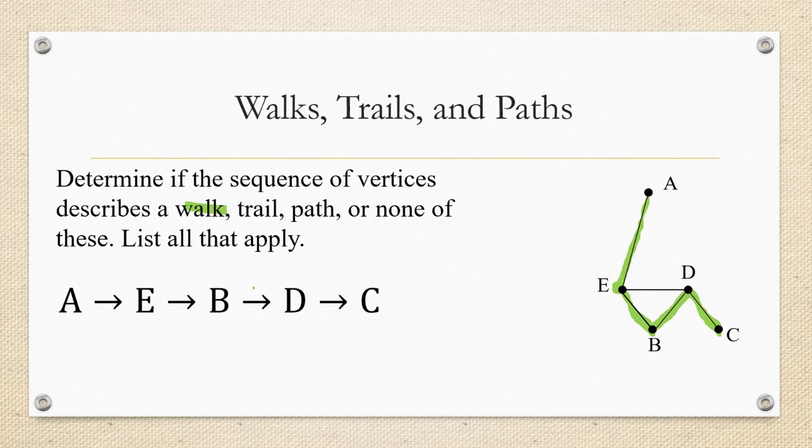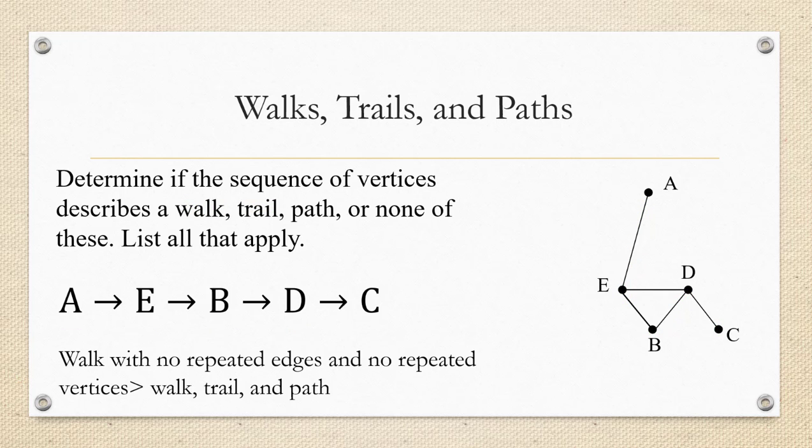Nope. We covered those four edges, and we never backtracked. So it's a trail also. And then we're going to ask ourselves, okay, if it's a trail, could it be a path too? And we look at our vertices, and none of them is repeated. So that means that it's a walk with no repeated edges and no repeated vertices. So it's a walk and a trail and a path.